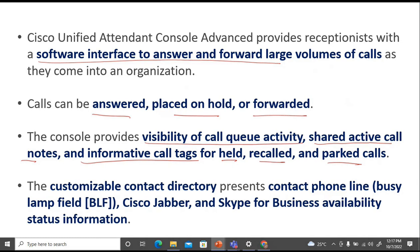The customizable contact directory in this console presents contact phone line information. Busy Lamp Field is available by default, along with Cisco Jabber and Skype for Business availability status information — all visible from this console.